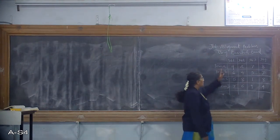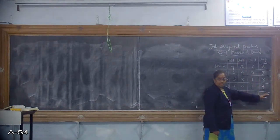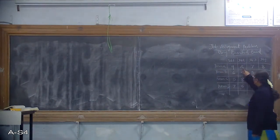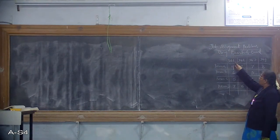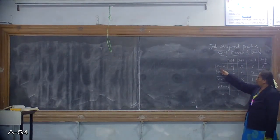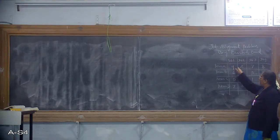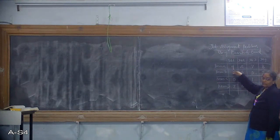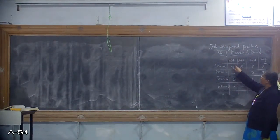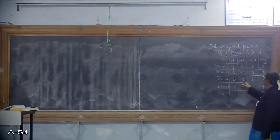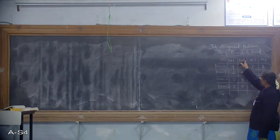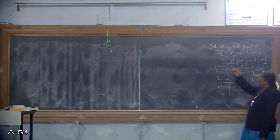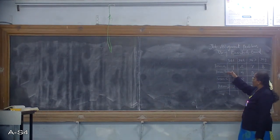Here they have given a matrix called the cost adjacency matrix. The value in the matrix represents the cost associated with that job to that person. For example, if person A wants to do job J1, he is going to quote 9 rupees. If person C wants to do job J4, he quotes 8 rupees. If person D wants to do job J2, he quotes 6 rupees.